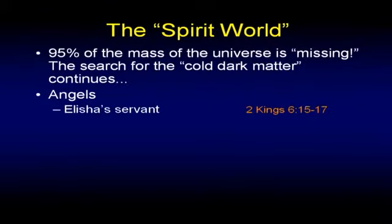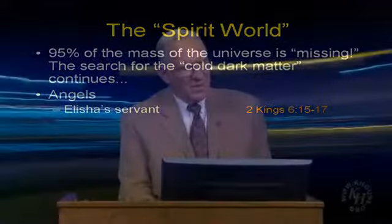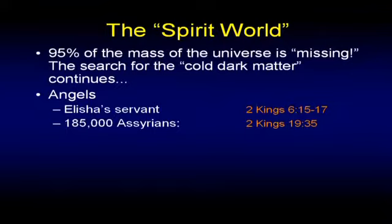Elisha's servant has that strange experience in 2 Kings 6. The servant wakes up in the morning, they're surrounded by the enemy, and he's panicked. But Elisha says, 'Lord, show them,' and the servant sees they're really surrounded by chariots of fire. It's one of those rare places in Scripture where someone is given a glimpse of a broader reality. There's also a case where one angel after dinner one night slaughters 185,000 Assyrians — 2 Kings 19. If nothing else, it tells you: you don't mess with angels.